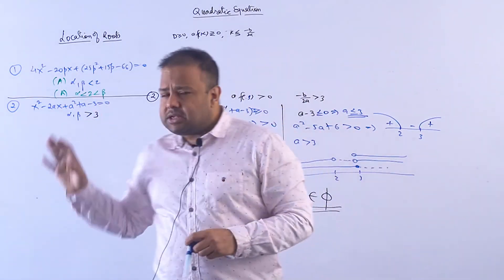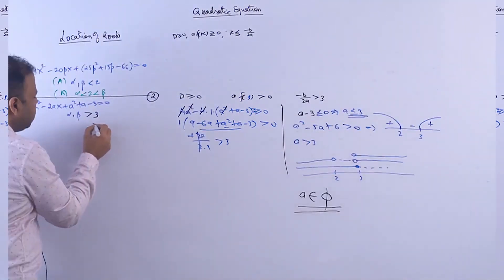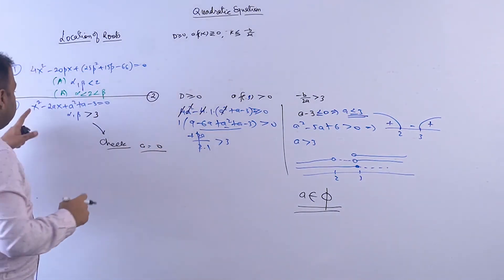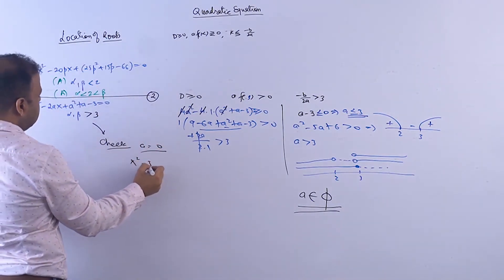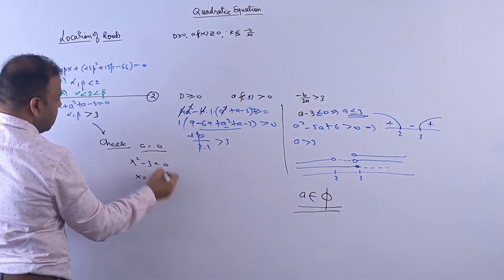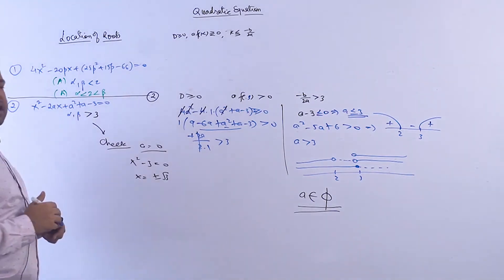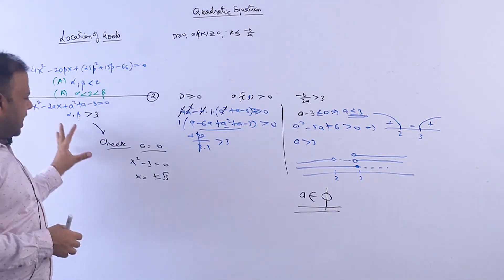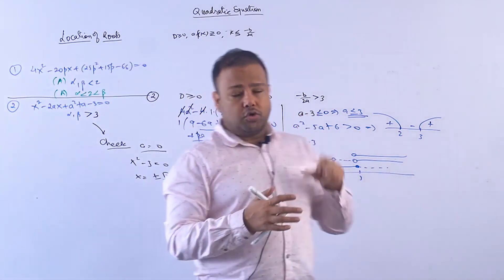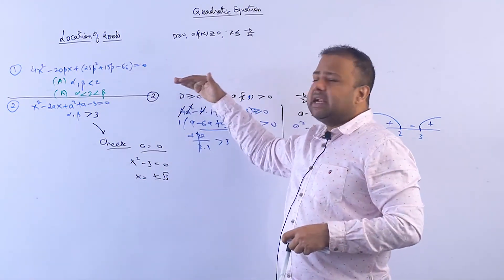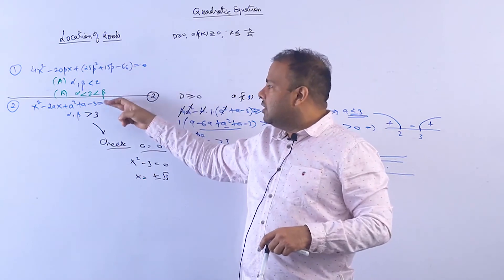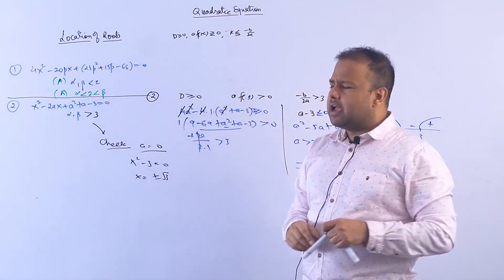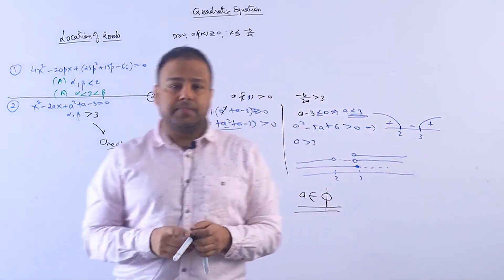Let's verify: take A = 0. The equation becomes x² − 3 = 0, so x = ±√3. Both roots greater than 3? No, in this case both roots are ±1.73, neither greater than 3. Whatever value of A you take, both roots cannot simultaneously be greater than 3.